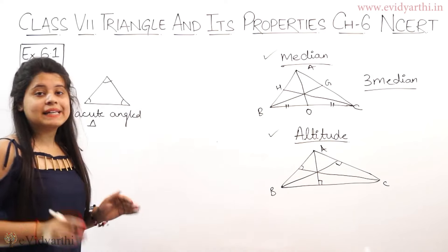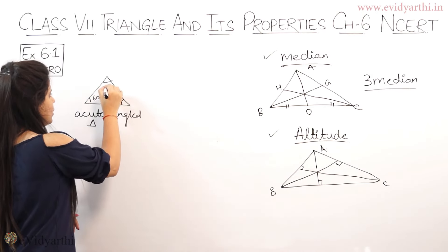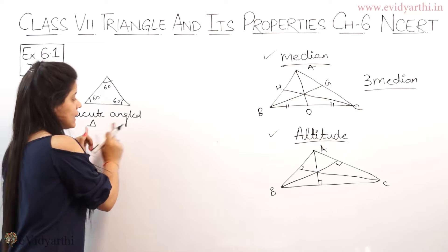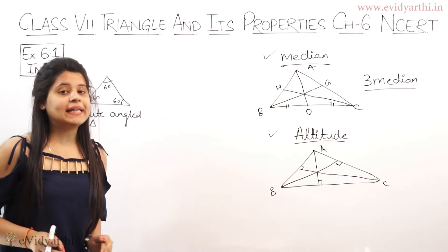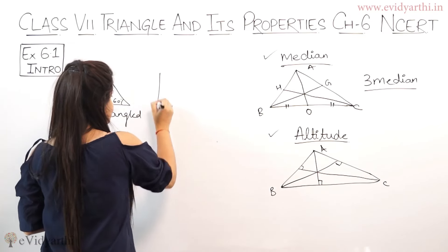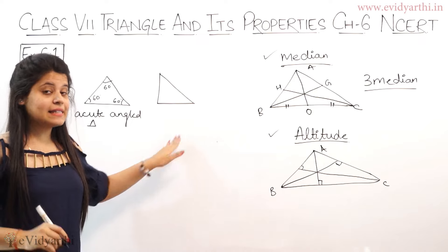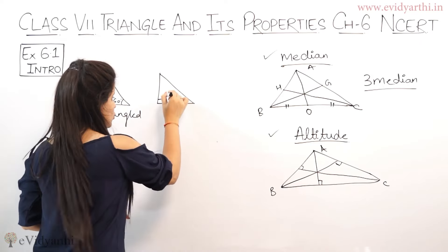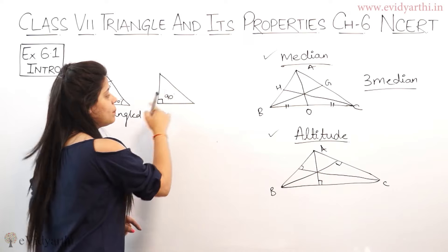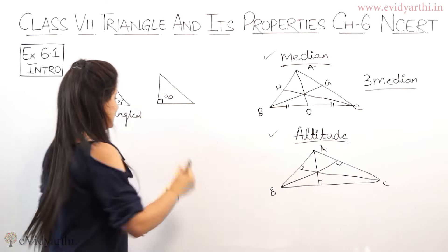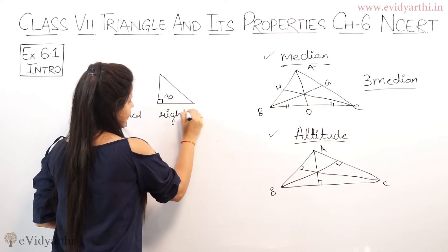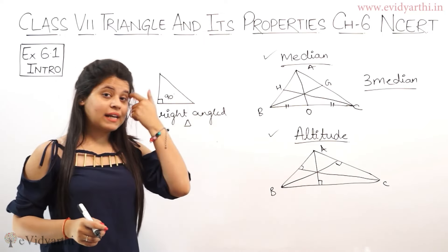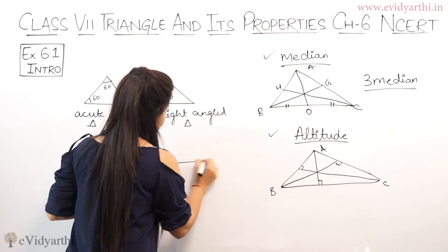Acute means less than 90 degrees, so this is called an acute angled triangle because all its angles are less than 90 degrees. Similarly, if I draw this triangle — this is a right angled triangle, because this angle here is 90 degrees. So if even one angle is 90 degrees, it becomes a right angled triangle.